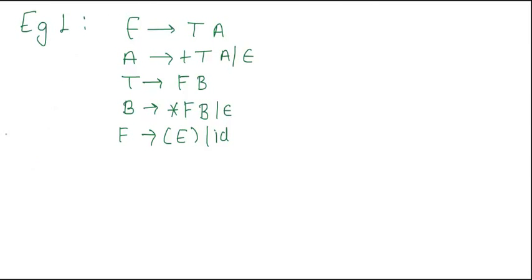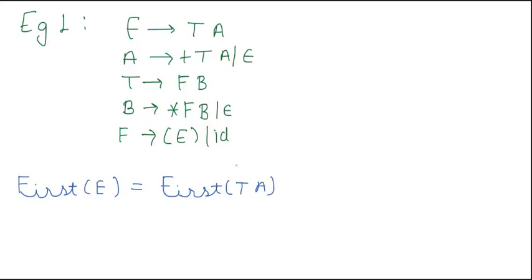For the calculation of First Set, firstly we will calculate First(E), which is equal to First(TA), which is equal to First(T). Here we can see that T does not derive epsilon — it gives us FB. So it would be equal to First(FB).